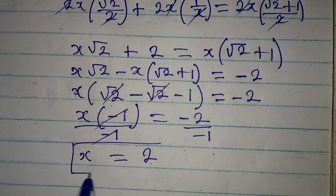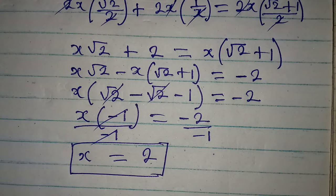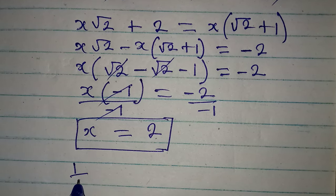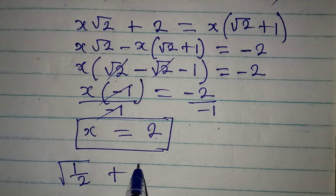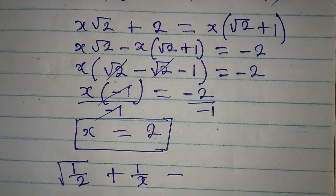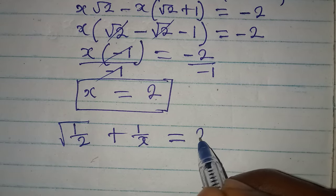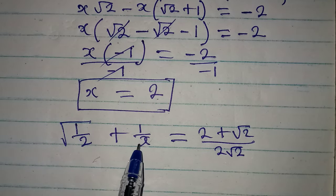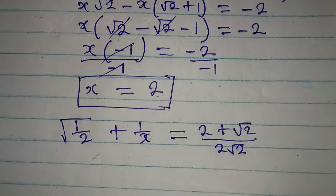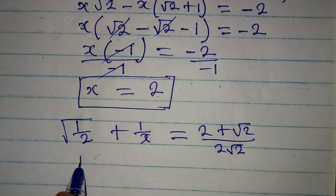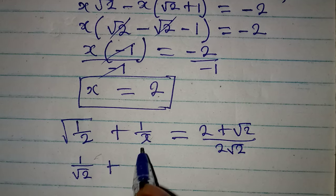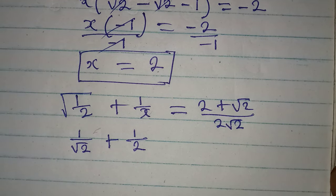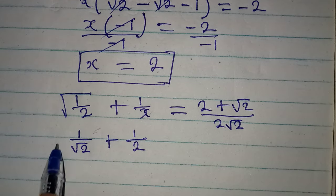So therefore x equals 2 is the value for the equation. Let's check by substituting into the original equation: square root of 1 over 2 plus 1 over x equals 2 plus square root of 2 over 2 root 2. Putting x equals 2, the left side becomes 1 over square root of 2 plus 1 over 2.